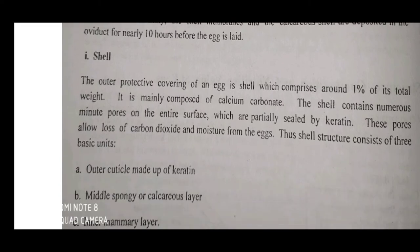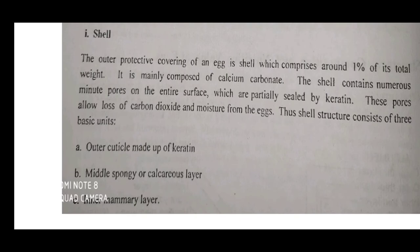The shell is the outer protective covering of an egg, comprising about 1% of its total weight. It is mainly composed of calcium carbonate. The shell contains numerous tiny pores on the entire surface, partially sealed by cuticle. These pores allow loss of carbon dioxide and moisture from the egg. The shell structure consists of three basic units: first, an outer cuticle made of keratin; second, a middle spongy calcareous layer; and third, an inner membrane.